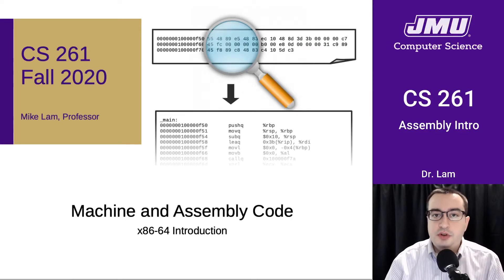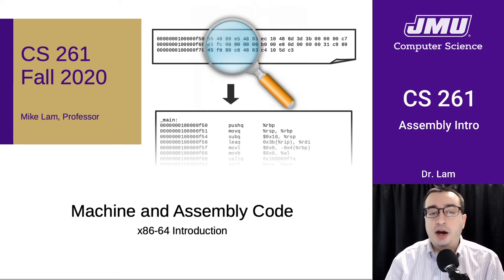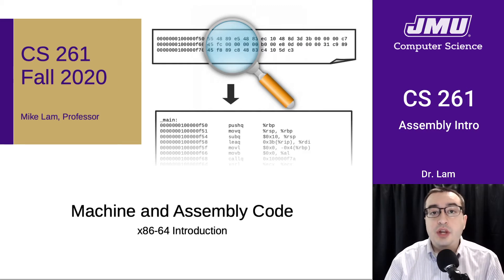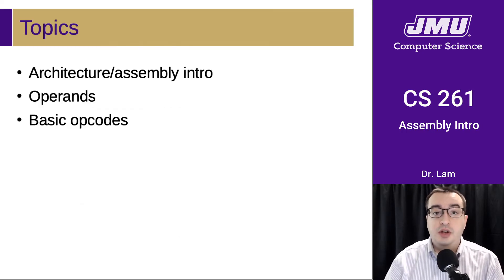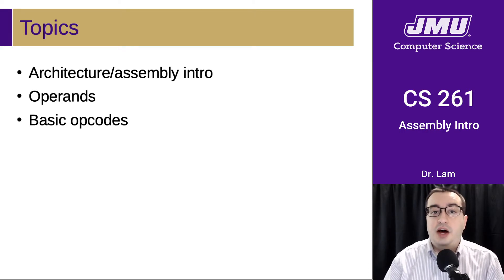Hello and welcome to the first mini lecture from the third module of this course. We just spent a few days learning about how we store data in binary, and now we want to move to how we store the program itself in binary. That will involve talking about both machine code and assembly code. Today's topics include a basic introduction to these concepts and an overview of how operands and opcodes work.